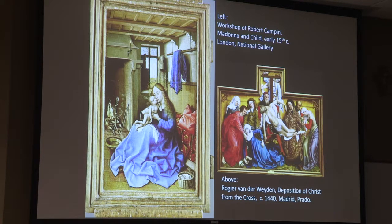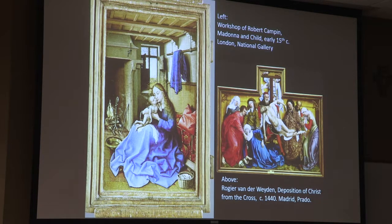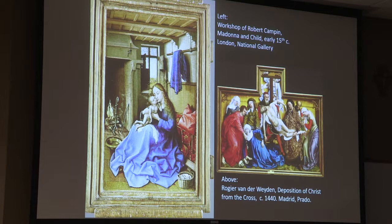In the background, the fire blazing in the hearth references the burnt offerings, the holocaust sacrifice — realized on the cross. A candle on the mantelpiece represents Christ as the light of the world. Even in this tiny devotional panel — so accessible and immediately attractive — there is sophisticated theological meaning embedded throughout.